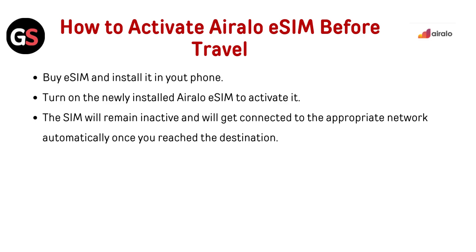To activate AirLo eSIM before travel, buy the eSIM and install it in your phone. Then turn on the newly installed AirLo eSIM to activate it. The SIM will remain inactive and will get connected to the appropriate network automatically once you reach your destination.